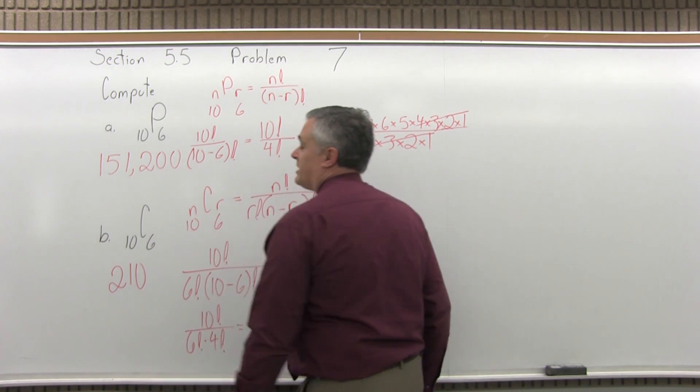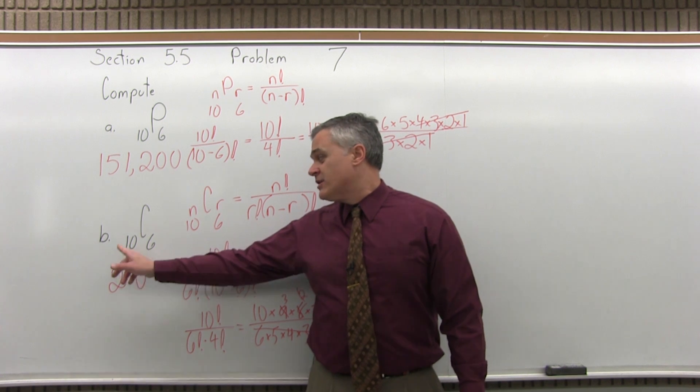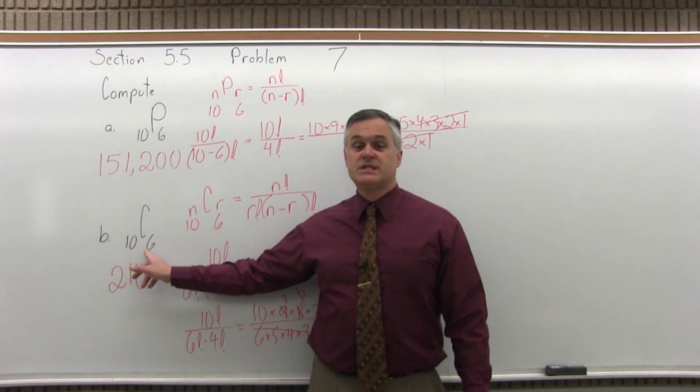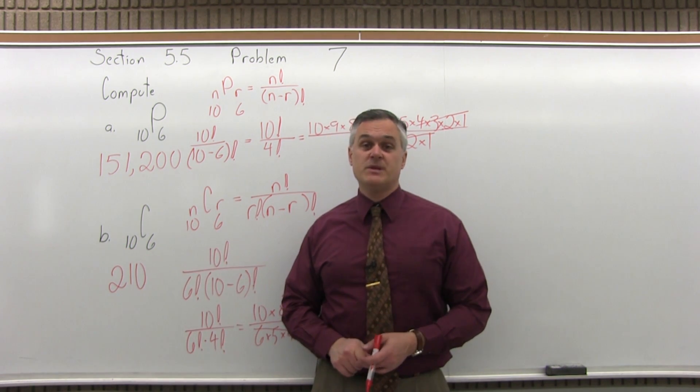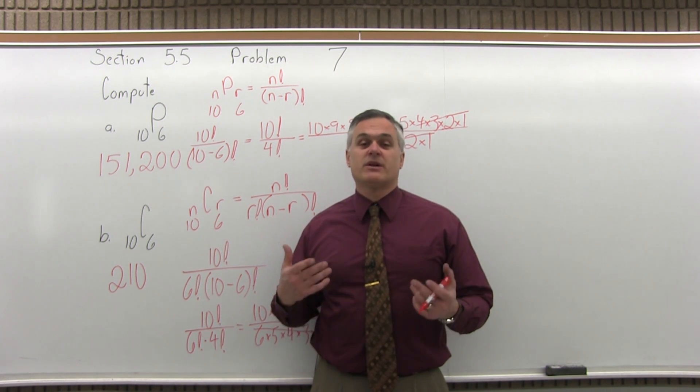So for combinations, it's a lot smaller. If you have 10 items to choose from, there are 210 different ways you can choose 6 of them if there are no repeats allowed and the order doesn't matter. The same items in a different order count as the same answer.